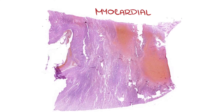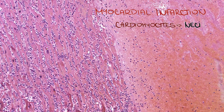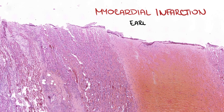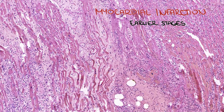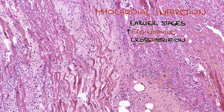In this picture, you can see a myocardial infarction. Cardiomyocytes are necrotic, with loss of stainable nuclei and increased eosinophilia of the cytoplasm. Here we can see earlier stages of necrosis. The nuclei are still at least partially preserved, but the cytoplasm is a little bit more eosinophilic, loses cross-striation, and the cells are slightly waved.